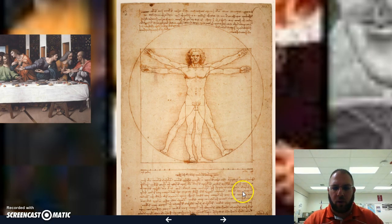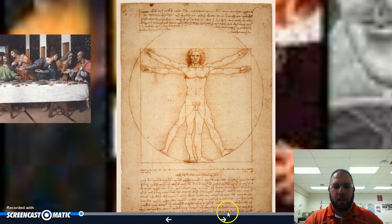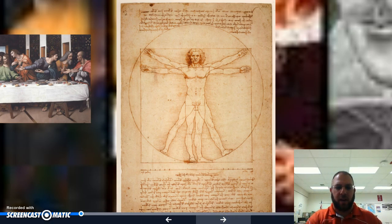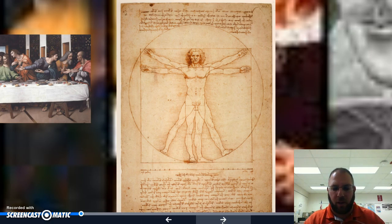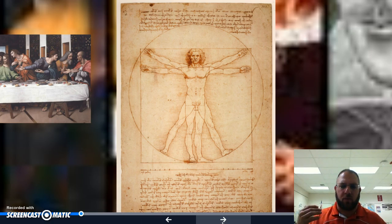Da Vinci's writing is actually backwards — to read it, you had to read it in a mirror. That was one way he kept people from taking his ideas. Da Vinci is also known to have written in both directions and with both hands at the same time, writing two completely separate sentences simultaneously. We're talking about an extremely intelligent man who was well above and beyond anyone else in society.